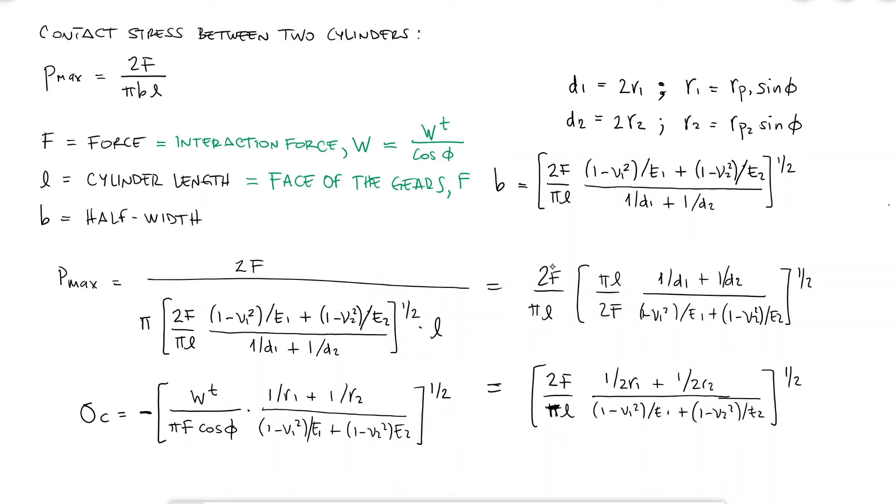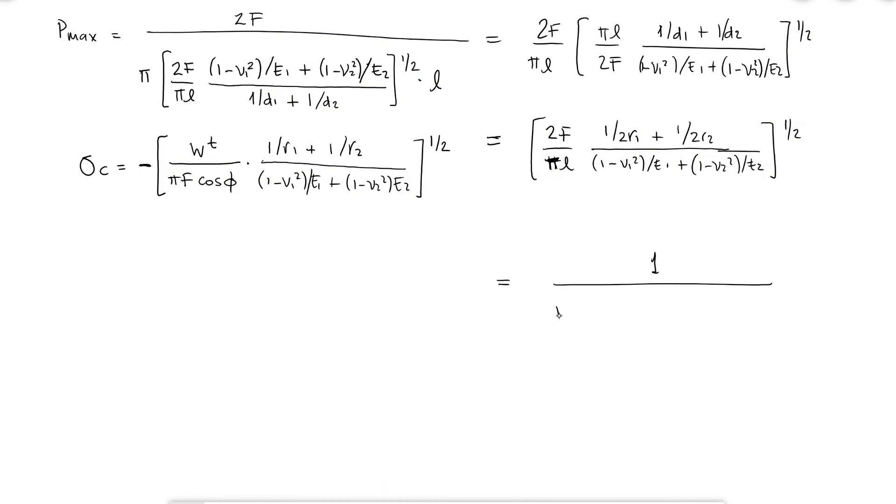Since the terms that depend on the material of the gears, which are the elastic modulus and the Poisson's ratio values, will have a finite number and more importantly, a short list of possible combinations, as you would probably not make a polystyrene gear with a stainless steel one, the whole term with those variables is taken out of the equation and called the elastic coefficient cp.